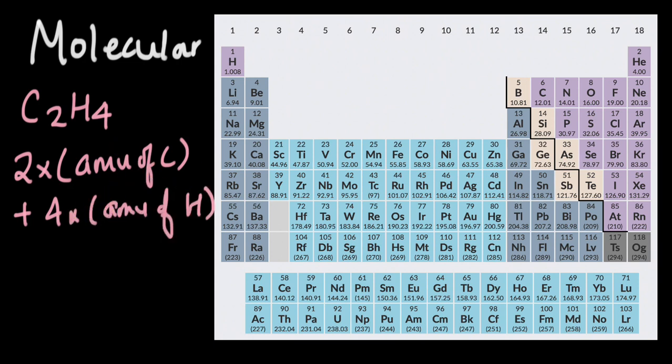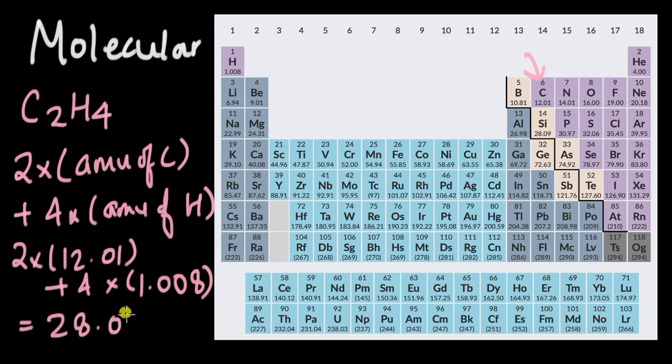So this would be two into the atomic mass of carbon plus four into the atomic mass of hydrogen. So atomic mass of carbon, if you look at the periodic table, carbon is right over here. This is 12.01. So two into 12.01 plus four into the atomic mass of hydrogen, which is over here. And this is 1.008. Now when we solve this, this comes out to be equal to 28.052, again atomic mass units.